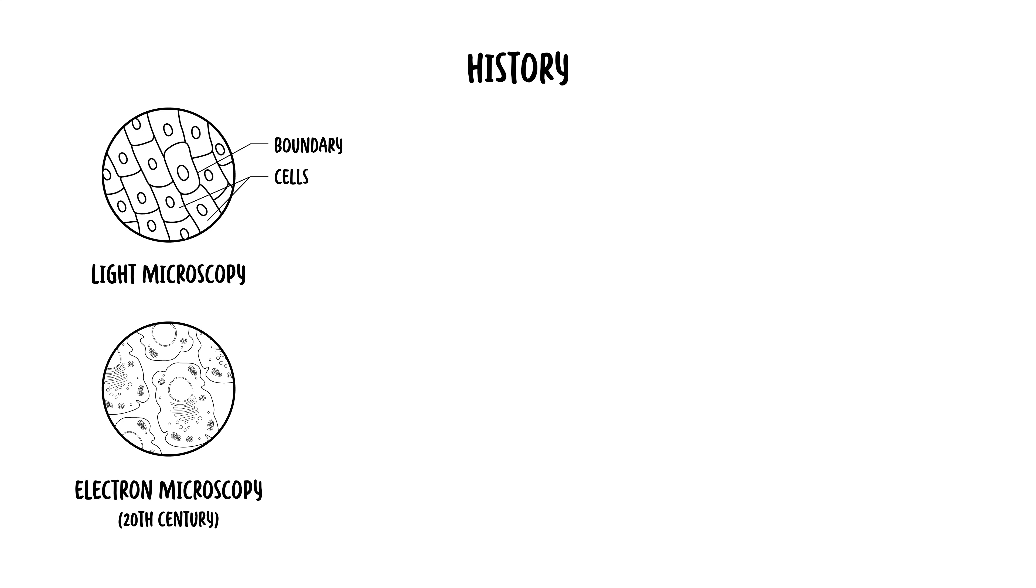Now, let's talk a bit about history of the cell membrane. The study of the cell membrane has evolved significantly over the past century. Early observation in the 19th century using light microscopy hinted at the existence of a boundary surrounding cells. The development of electron microscopy in the 20th century allowed scientists to observe the membrane's fine structure in greater detail.